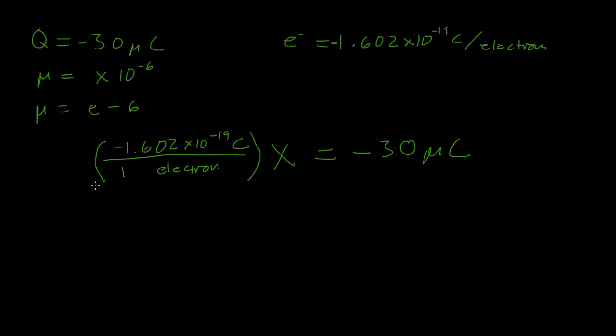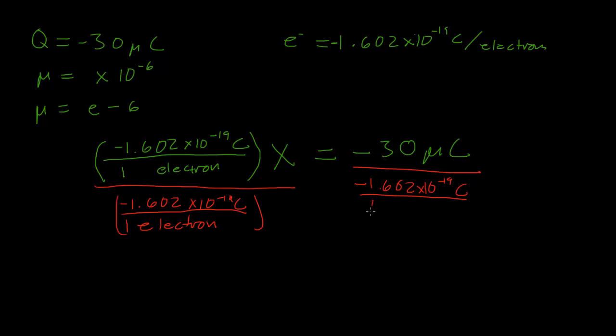So we just need to solve for x. We'll divide both sides by this fraction, negative 1.602 times 10 to the negative 19th coulombs per one electron, and we'll do that on both sides.